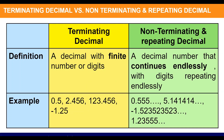What about non-terminating and repeating decimals? A decimal number that continues endlessly with digits repeating endlessly. Examples: 0.555...; 5.141414...; negative 1.523523523...; and 1.2555...